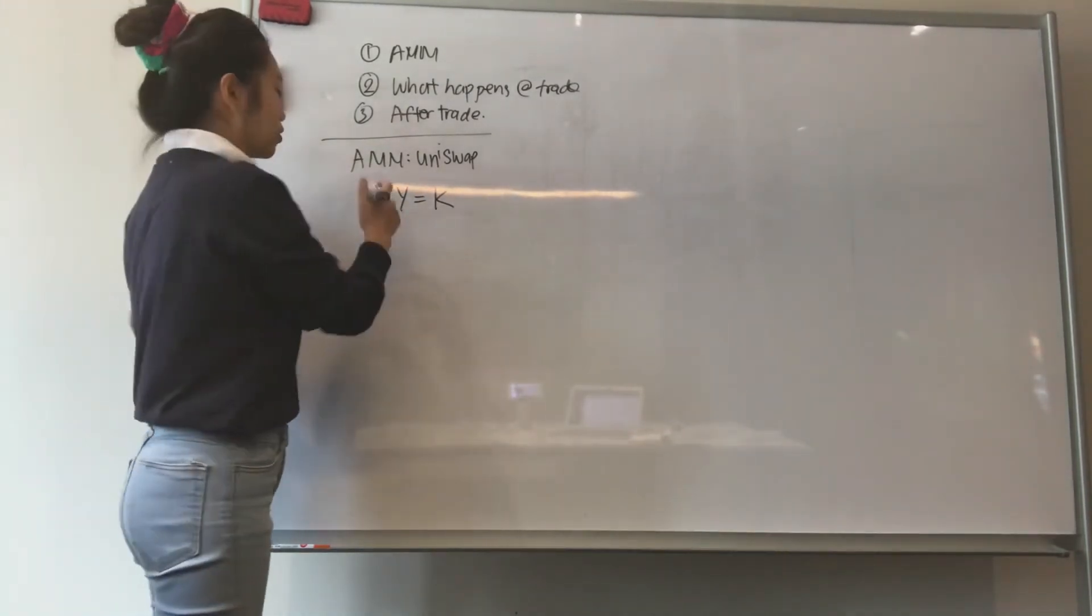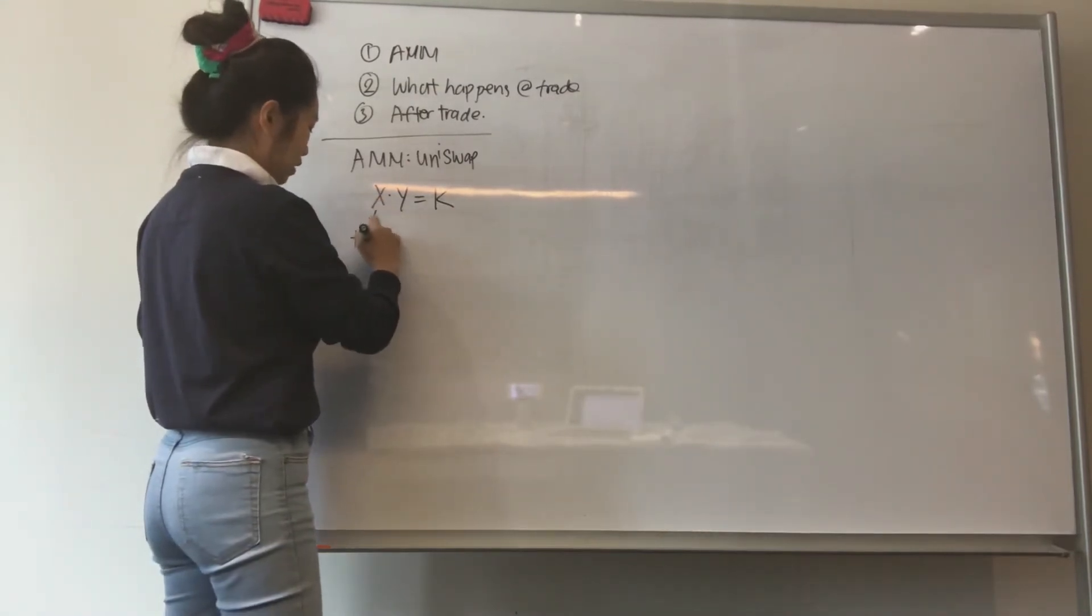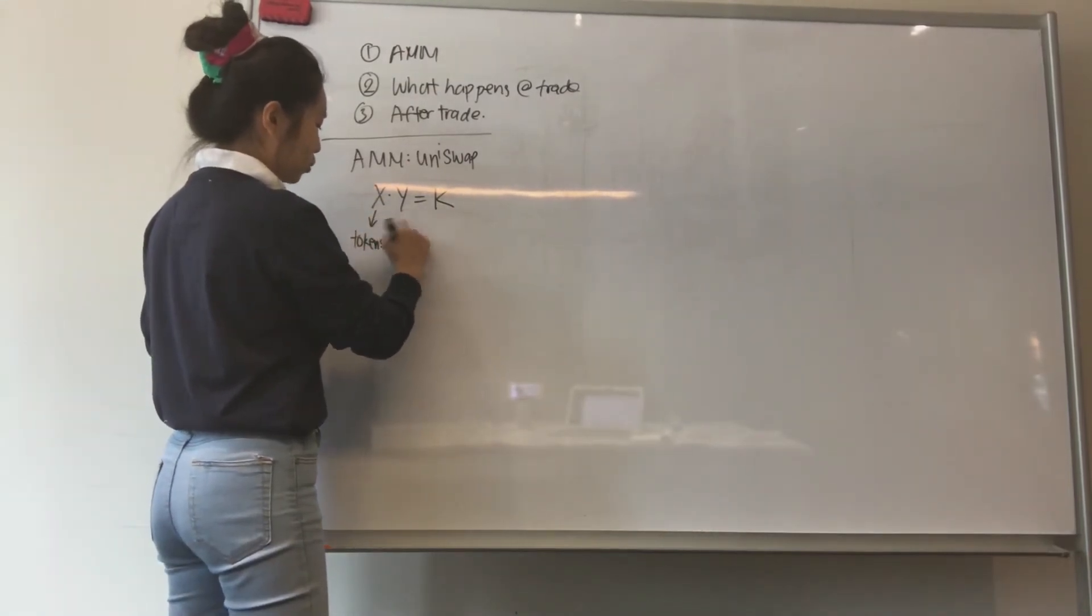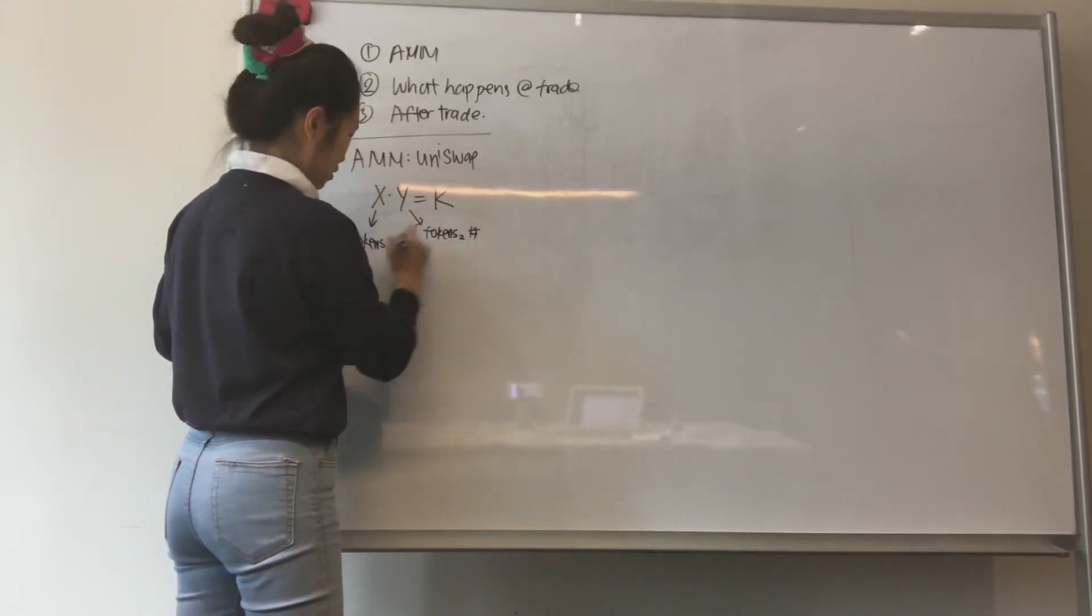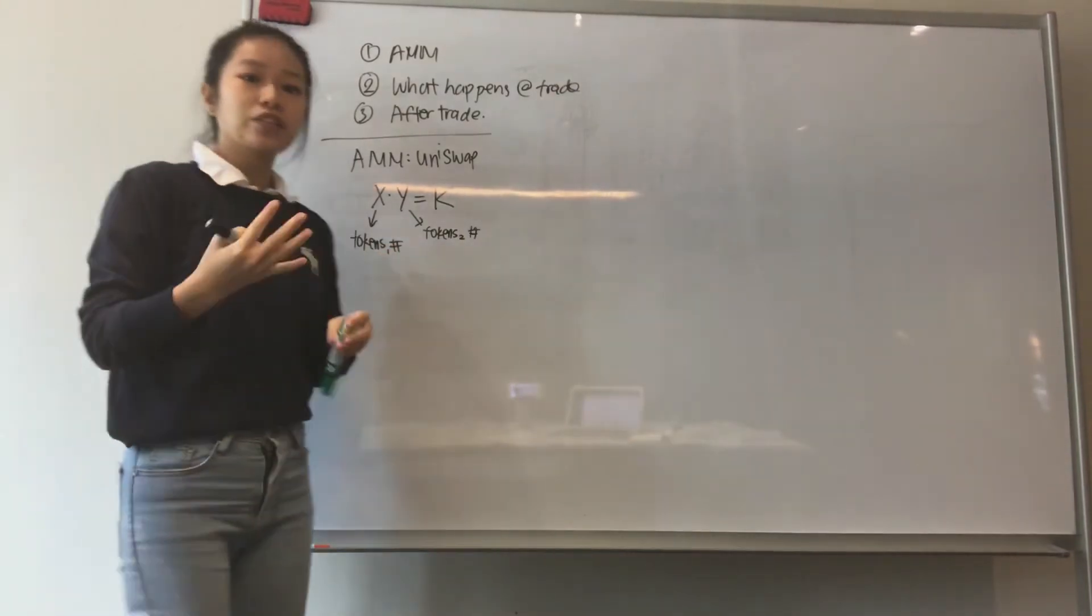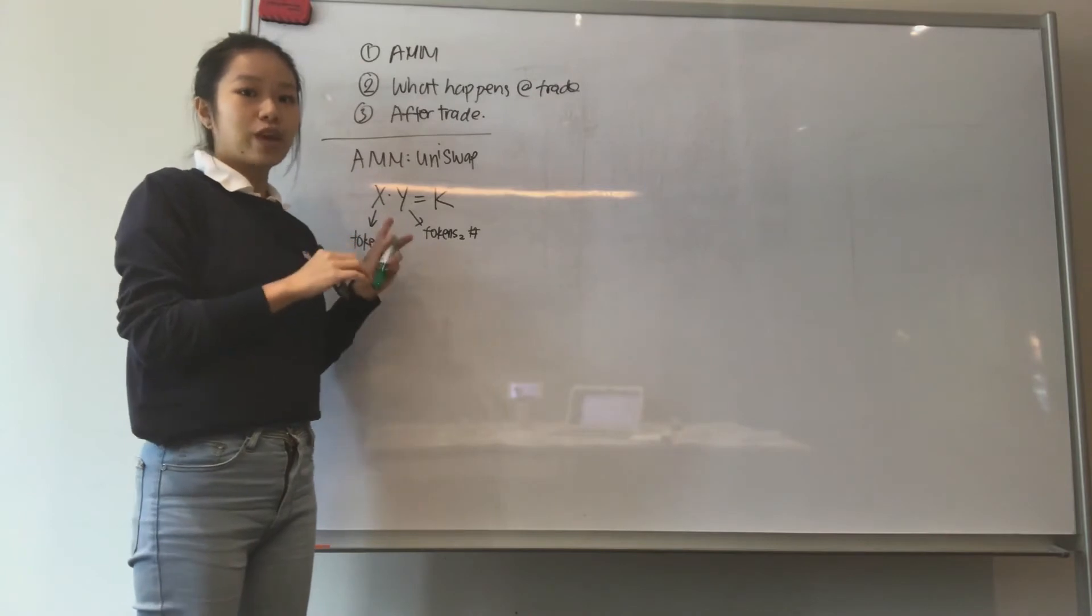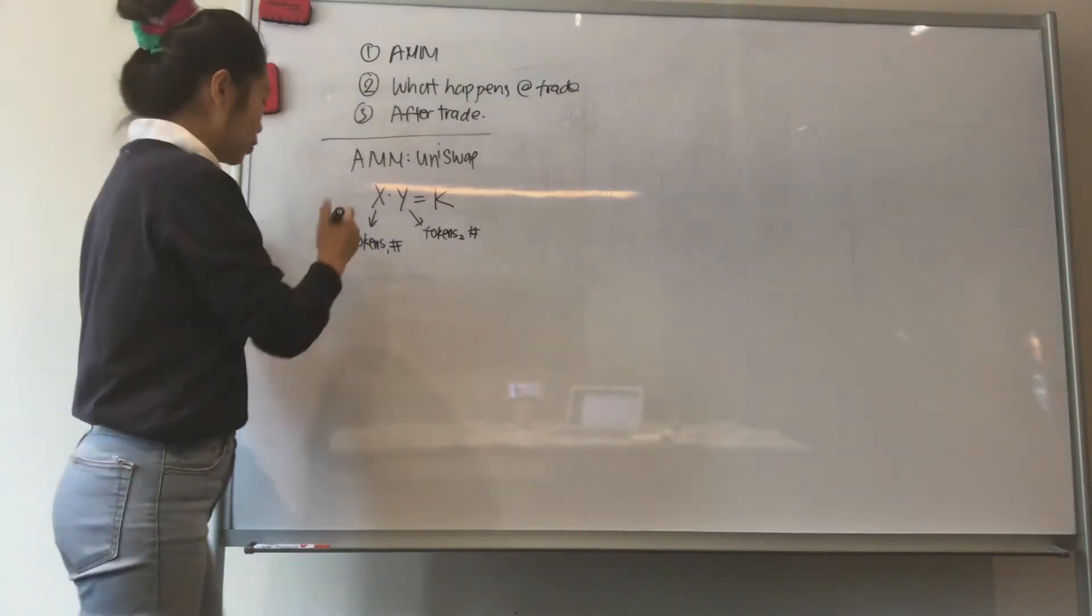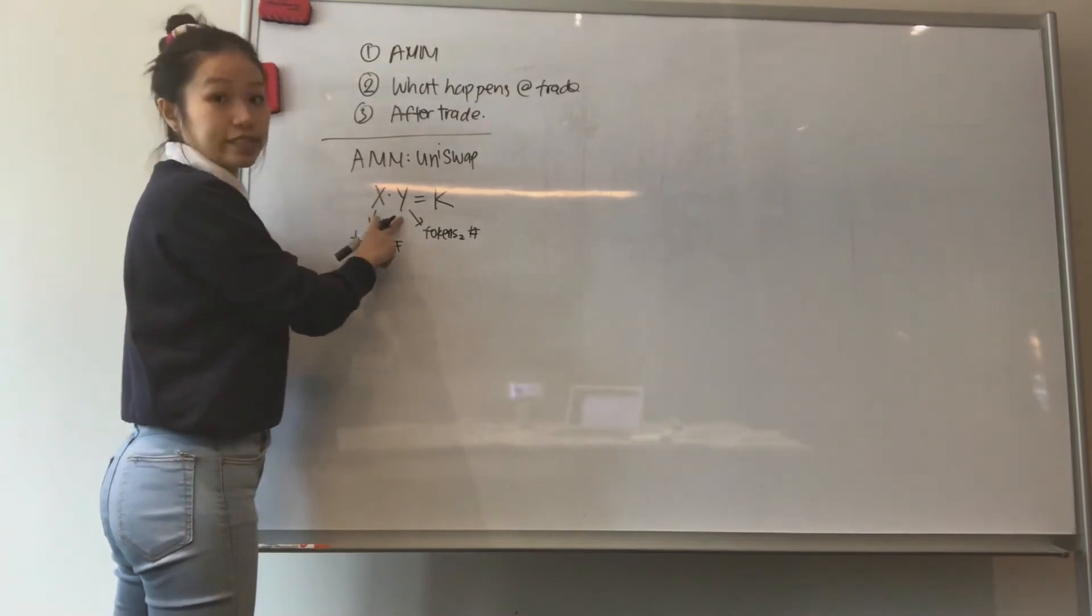So this is just the basic stuff. So what's x and y? x and y are the tokens. Tokens quantity. So tokens 1 and token 2. The thing about Uniswap is that for all these different AMMs, one of them is definitely ETH. So you have the amount of ETH which is x and the amount of the second token which is y.